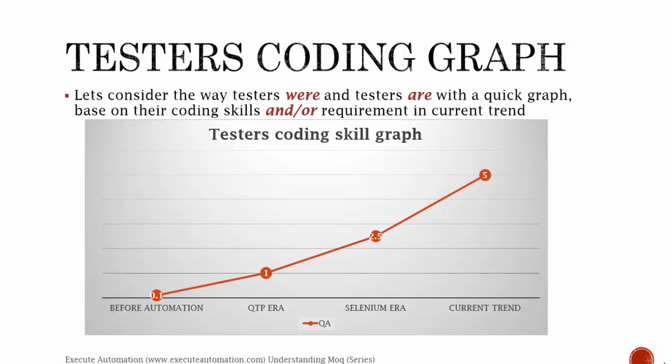If some companies are using PHP or some open source language for developing their application, then testers were forced to use Ruby or Python. That's why testers are no different from developers. In the Selenium era, the programming skill for testers is about 2.5 out of 5, and in the current trend, it is pretty much close to a developer — five out of five.